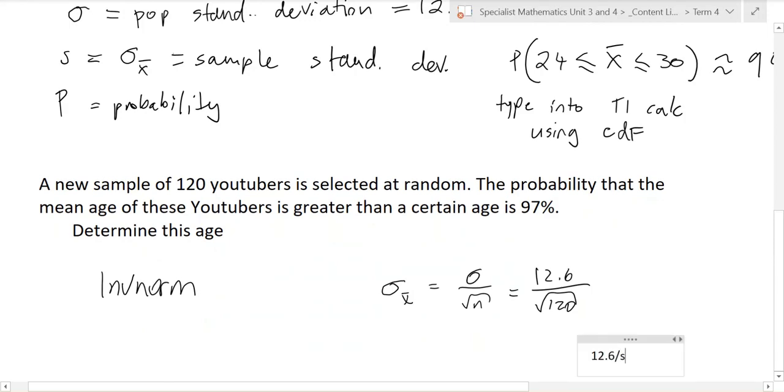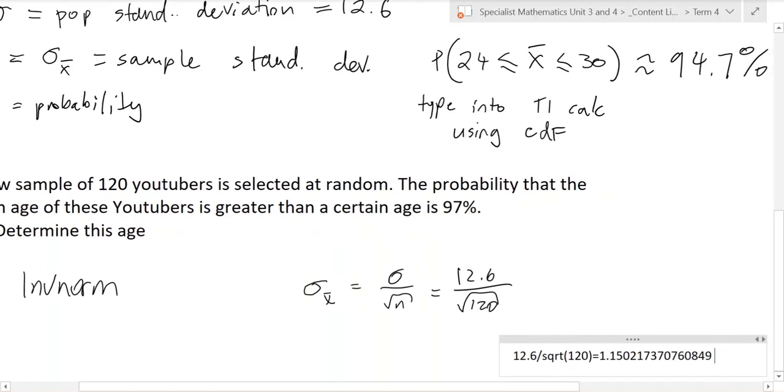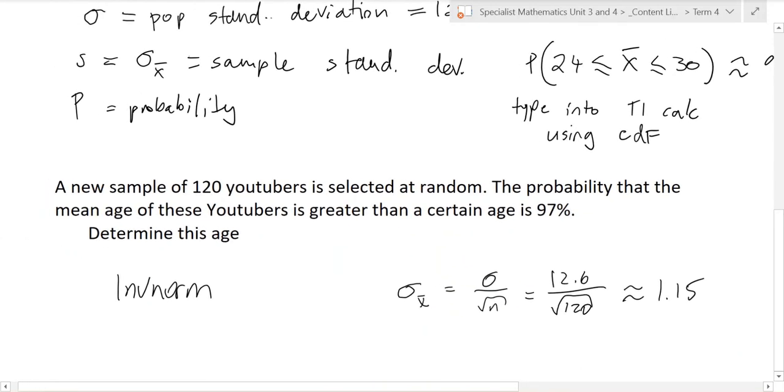12.6 divided by square root of 120 equals, there you go. Inverse norm now. Now that we have the sample standard deviation.